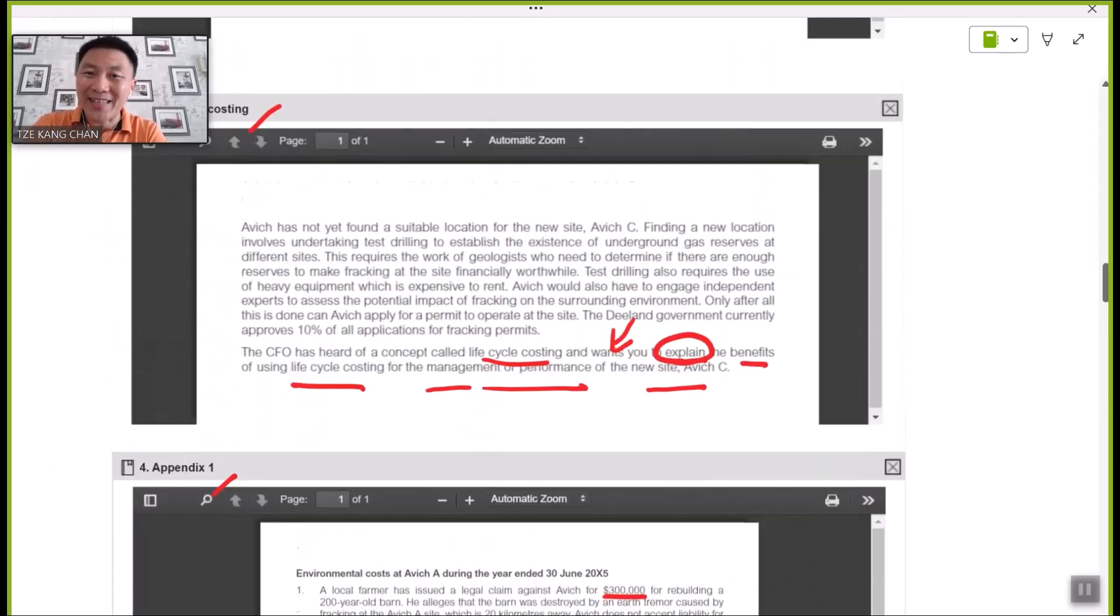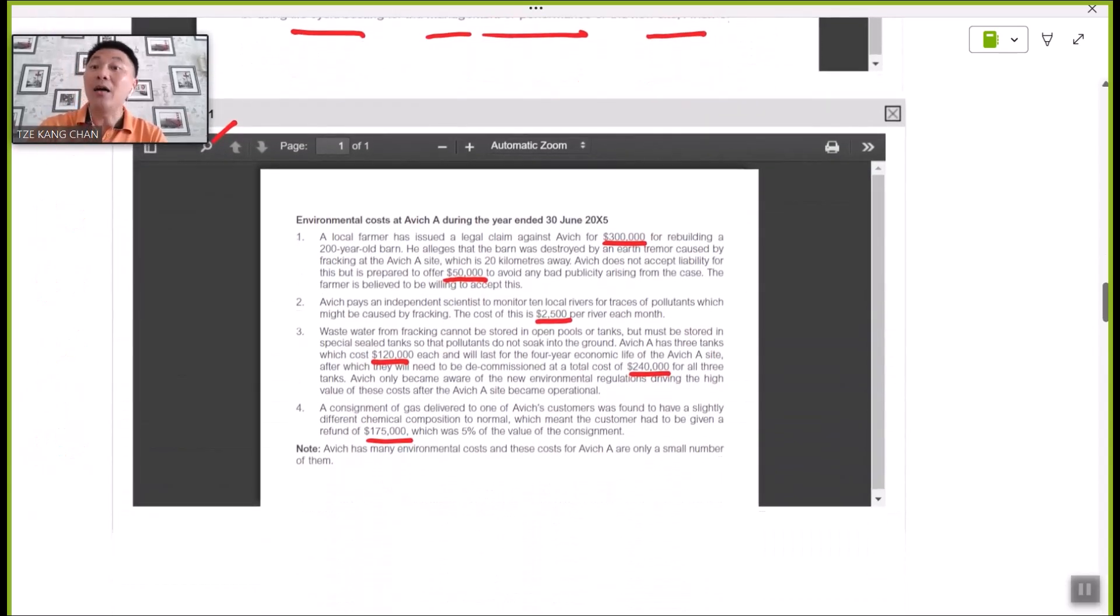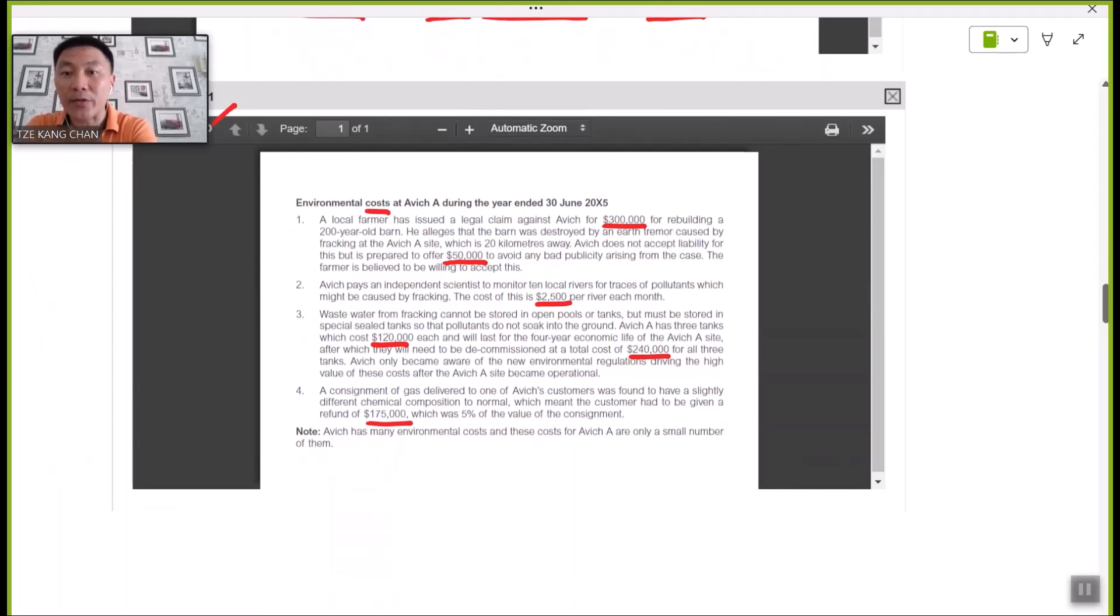And finally, here is appendix one for your reference to be used in answering part A of the requirement. These are some typical information on environmental costs pertaining to one of the project sites, Site A. The numbers indicated by the red line are clearly different types of costs that have been picked up as environmental costs, and you have to just group these six elements of cost into the four headings and make sure each of the classifications of the cost has to be well justified, explaining your reasoning why the cost is to be classified as such category.